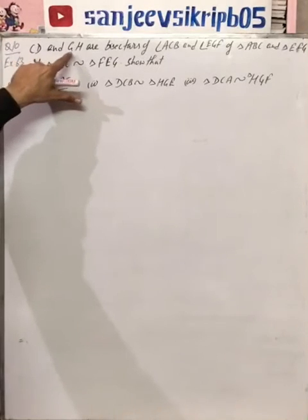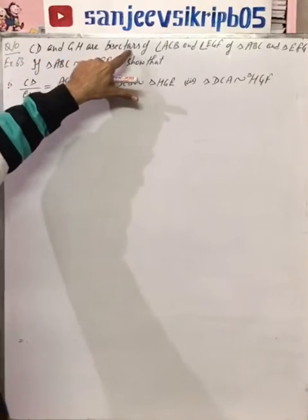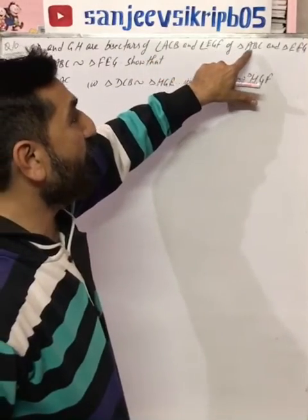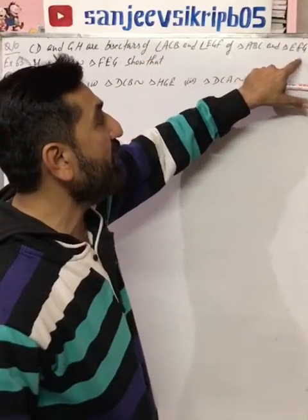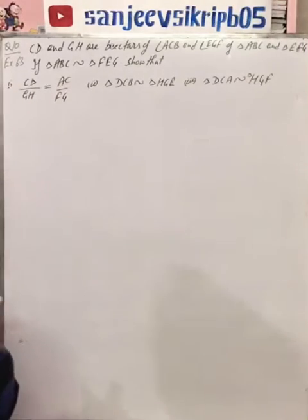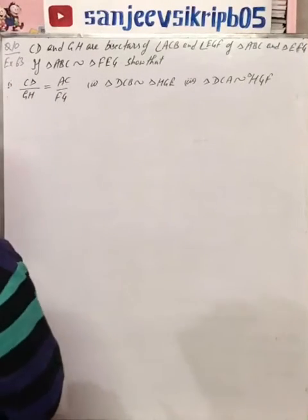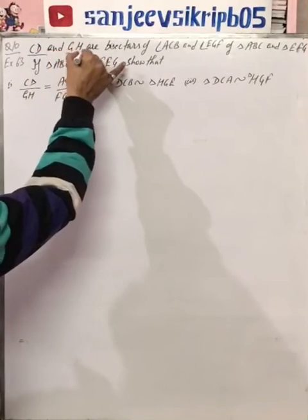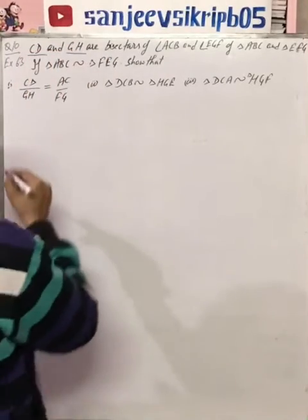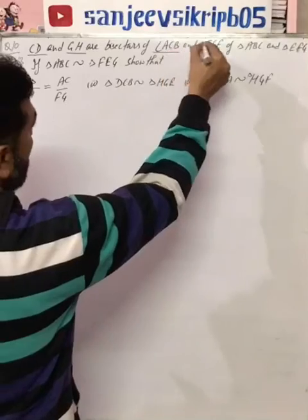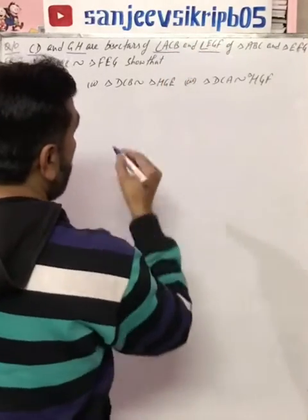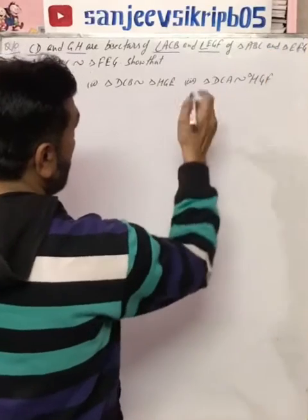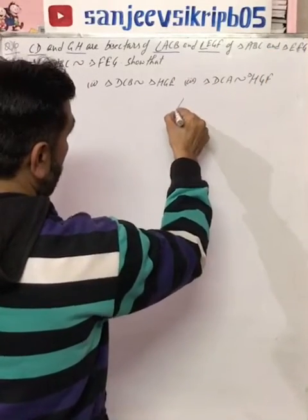CD and GH are bisectors of angle ACB and angle EGF of triangle ABC and triangle EFG. So as you read this statement, that means we are given two bisectors: CD and GH. And bisectors are of angle ACB and EGF of triangle ABC and EFG. So let's take a look at two triangles.